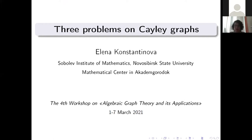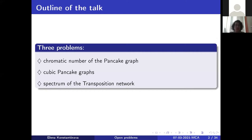I'm going to present three problems on Cayley graphs. Some of these problems may be unknown to you, as I've presented some at different conferences. The first concerns the chromatic number of the pancake graphs. I'll briefly show what pancake graphs are and the problems dealing with these graphs. All these graphs are considered as models in computer science, so they have applications.